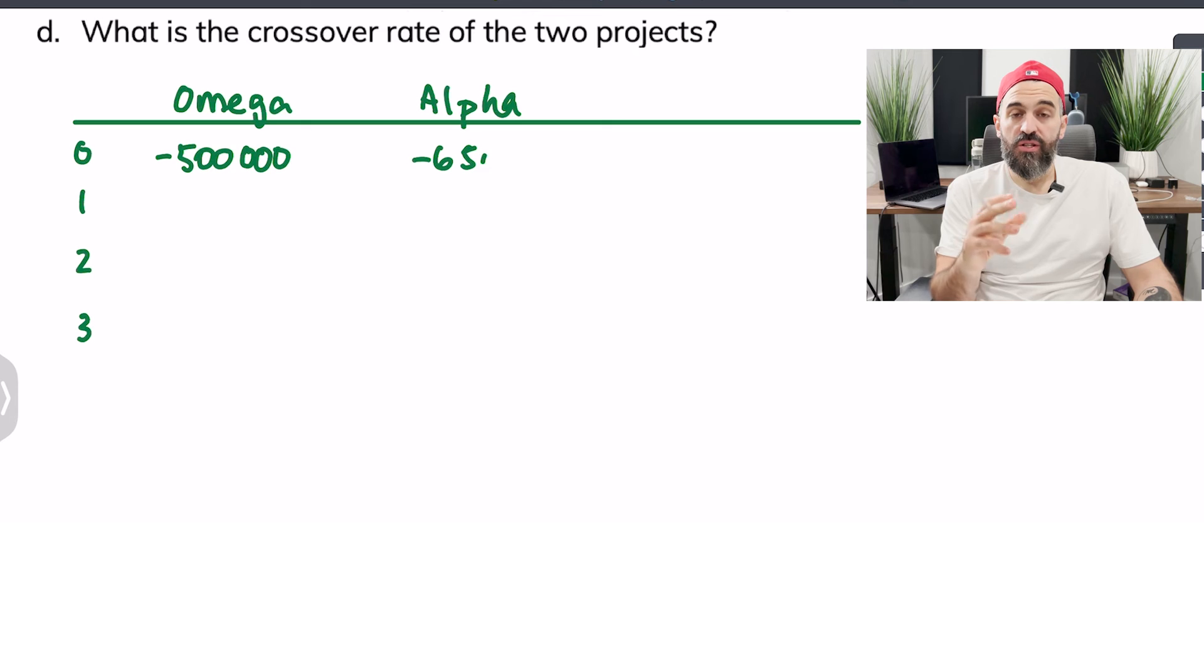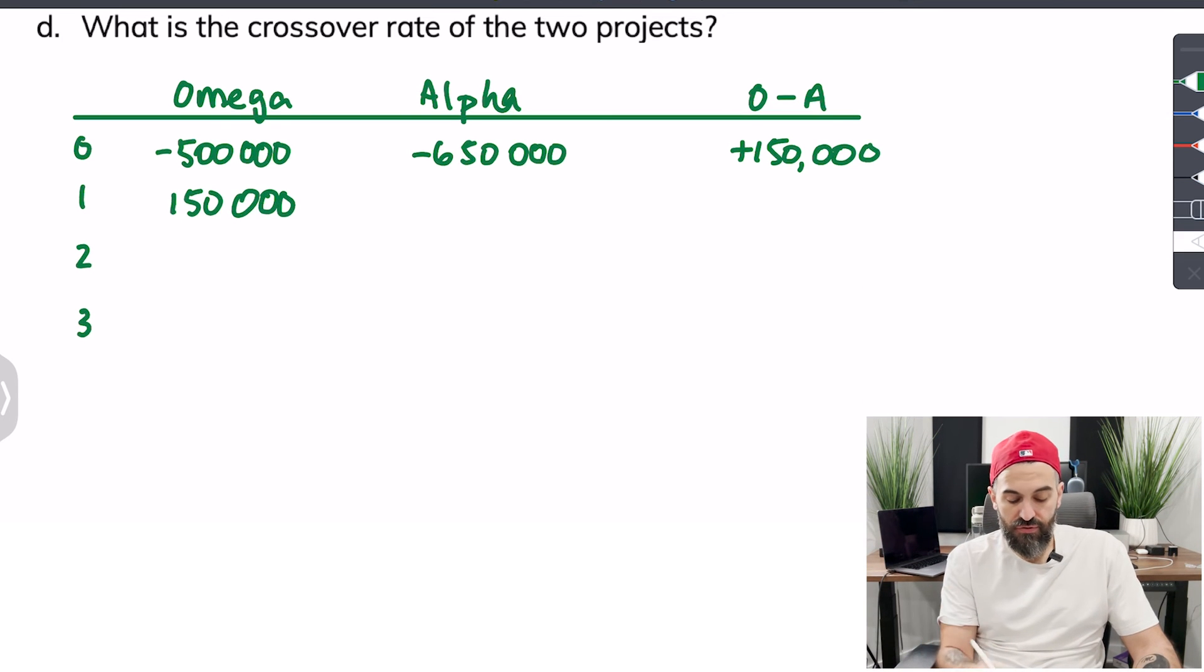To find the crossover rate you want to take the difference so we're going to make a new column here we'll just call it Omega minus Alpha. So that'll be negative $500,000 minus negative $650,000 which is actually positive $150,000.